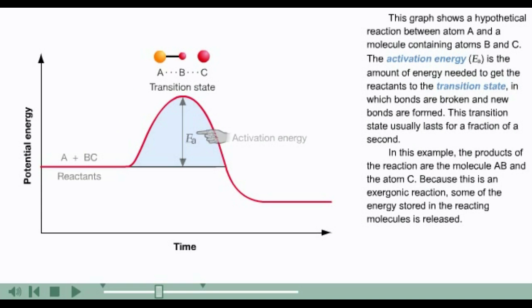This transition state usually lasts for a fraction of a second. In this example, the products of the reaction are the molecule AB and the atom C. Because this is an exergonic reaction, some of the energy stored in the reacting molecules is released.